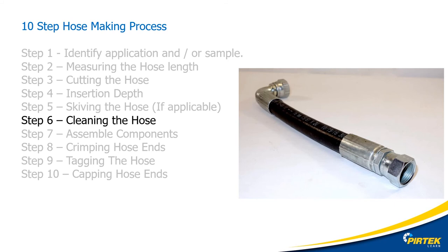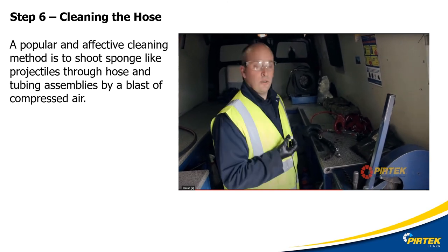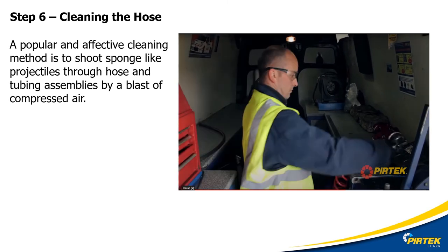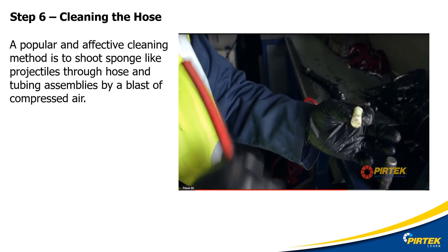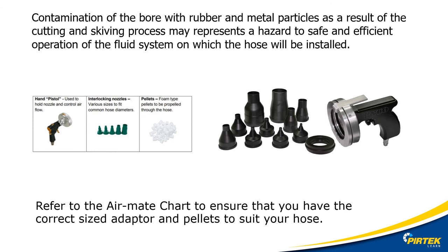Step six: cleaning the hose. We're going to put a pellet through just to clean the hose. As you can see, the old pellet has collected all the dust and residue left after we cut the hose. A popular and effective cleaning method is to shoot a sponge-like projectile through the hose using compressed air. The appropriate pellet and nozzle type will need to be selected for the particular hose type — refer to the manufacturer's reference chart for correct usage details.